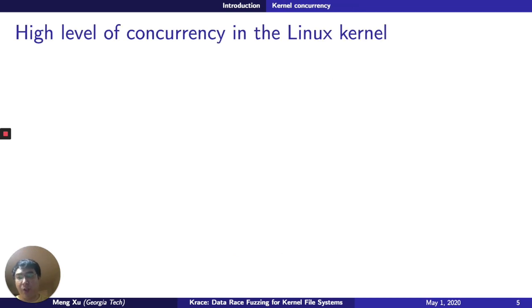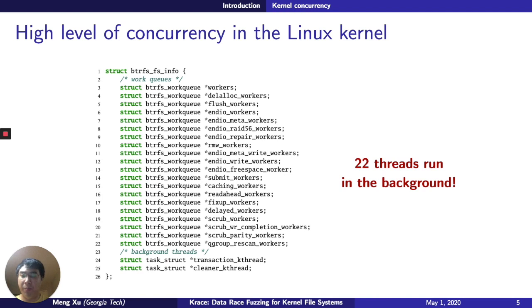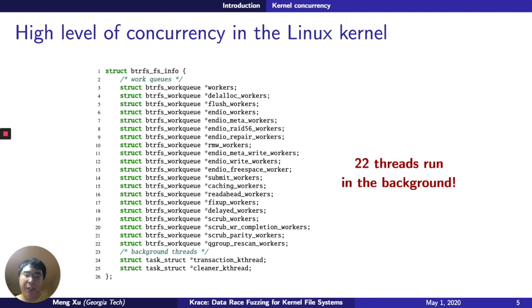Of course, the more concurrent code you write, the more likely we're going to have mistakes. This is not very good news for the Linux kernel, because the kernel is almost the most concurrent program we use every day. In the btrfs file system itself, there are 22 threads running in the background, and this doesn't even include threads that get forked out of these. These background threads interact with each other in processing file system operations, so there is every reason to believe data races may exist in the Linux kernel file systems.